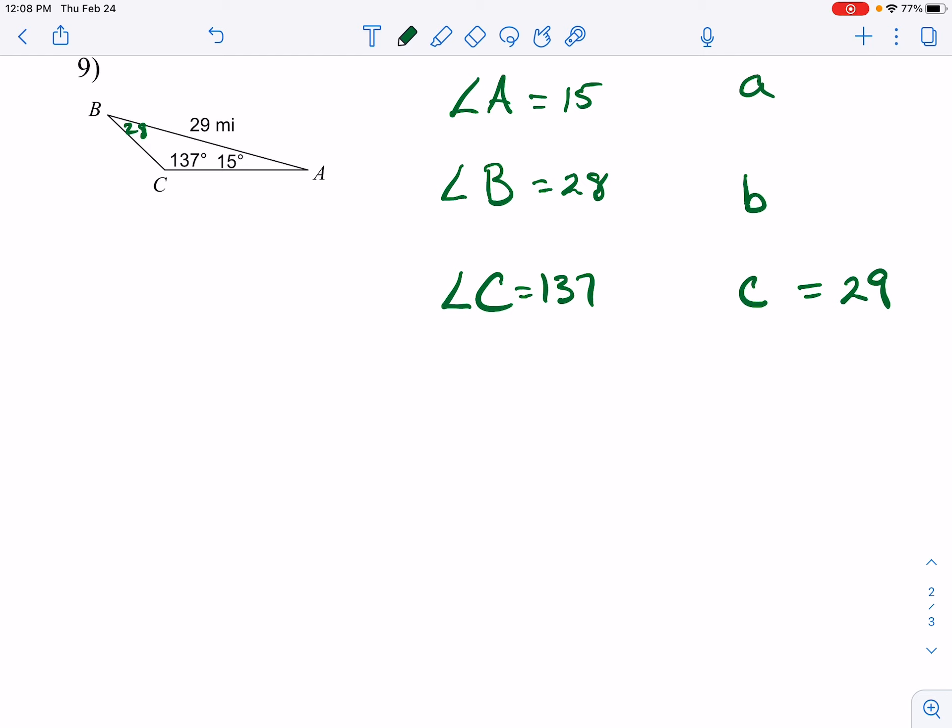So when I want to find little a, a over the sine of... no, that's not right. A goes across from the 15, my bad. A is across from that 15 degree angle, and then the 29 is across from the sine of 137. From there, you cross multiply to figure out A. To find little b, little b is across from the 28, and cross multiply to find b. And that's solving. Solving means you find all the angles and all of the sides.